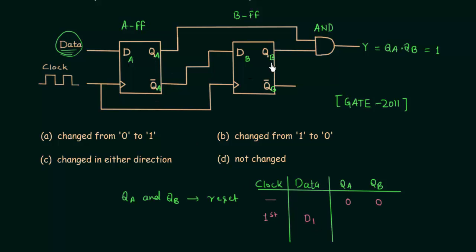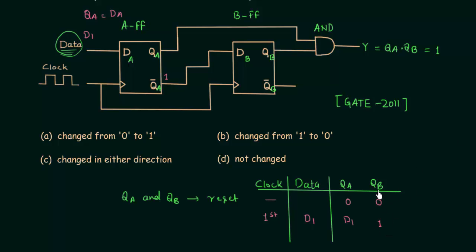For the first clock pulse, DA equals data equals D1, so QA equals D1 — but this D1 as QA is only available after completion of the first clock pulse. For the second flip-flop, DB equals QA complement. Initially QA was 0, so QA complement equals 1, meaning DB equals 1 and therefore QB equals 1. So QB equals 1, not D1 complement, because D1 is only available after the first clock pulse completes.